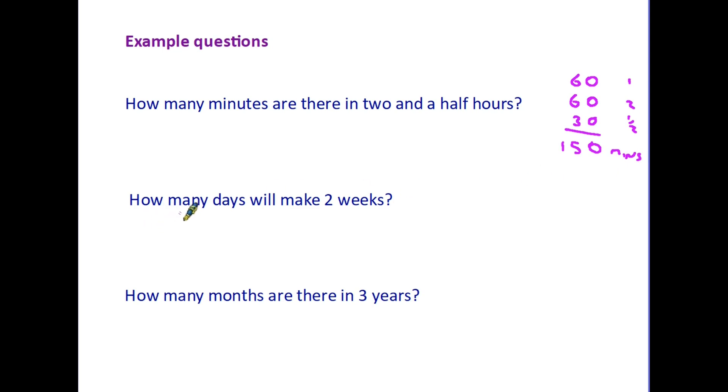The second one, how many days will make two weeks? Well that's a very similar method because we know that one week is seven days. So if we add another seven days on there, that's two weeks. That is 14 days. We might alternatively have said if one week is seven days, then we multiply that by two to get two weeks. And of course the answer is the same.